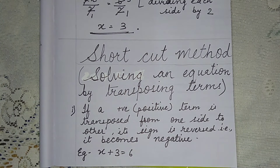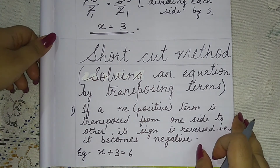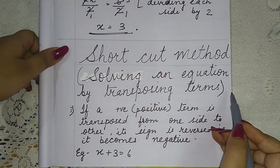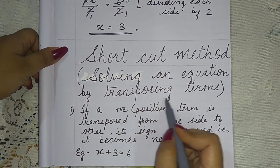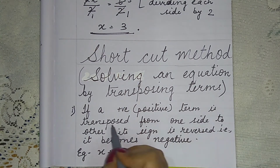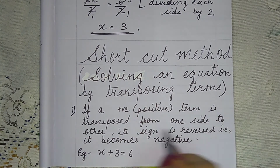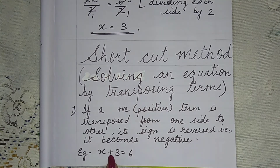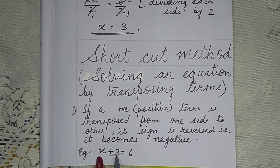This is the shortcut method. Solving an equation by transposing terms — transposing means taking a term from one side to the other. Point number 1: if a positive term is transposed from one side to the other, its sign is reversed — it becomes negative.